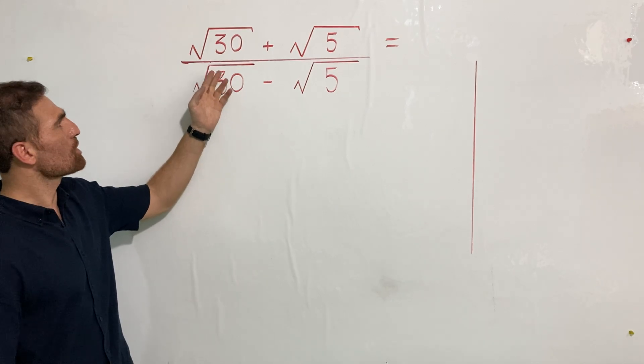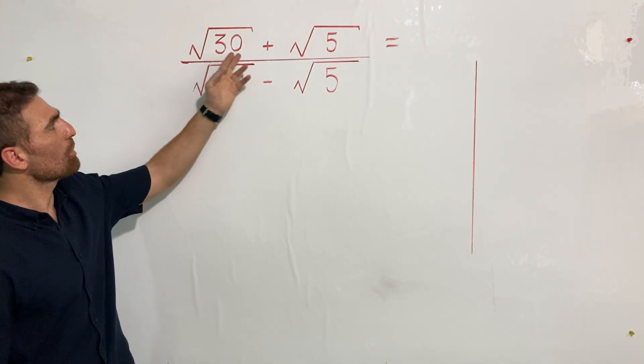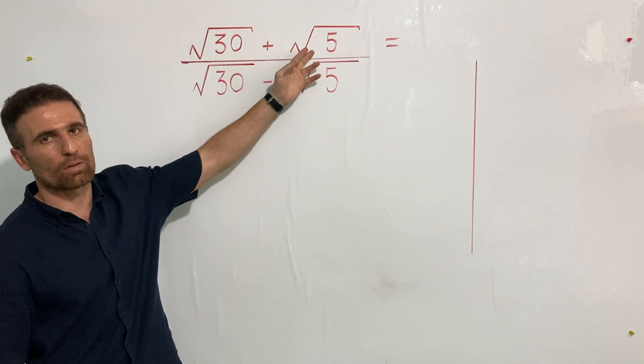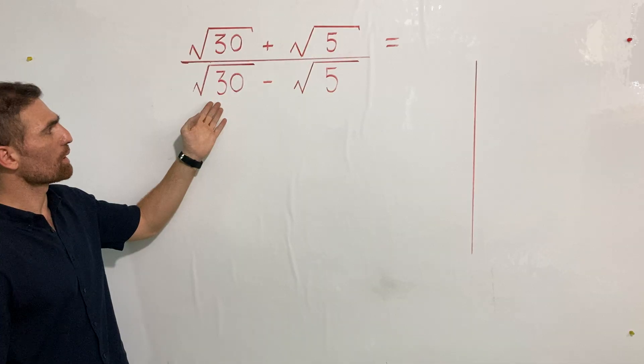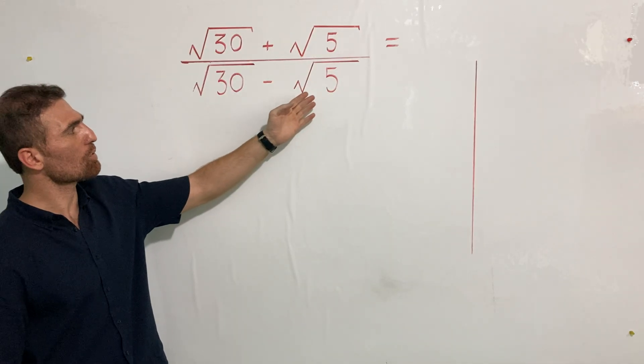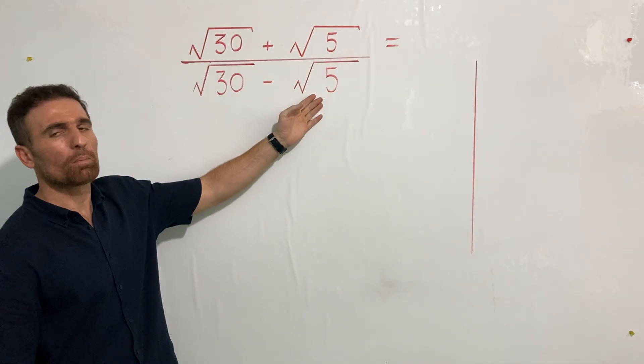We are going to find the value of square root of 33 plus square root of 5, over square root of 33 minus square root of 5.